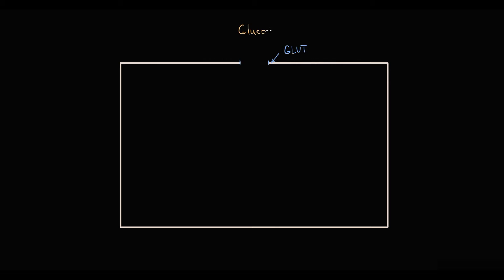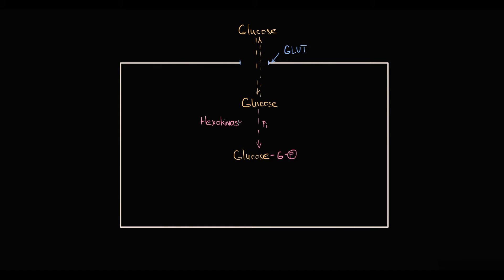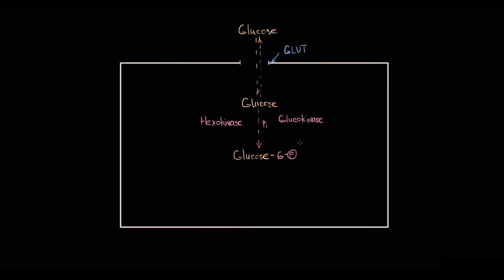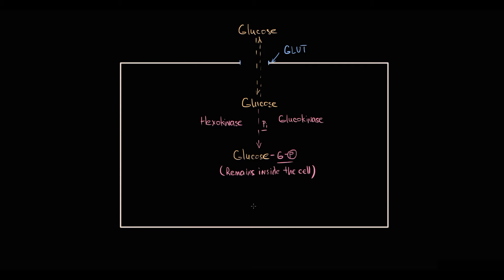Once glucose from the blood enters into the cell through a GLUT transporter, glucose has to be trapped by phosphorylation, because otherwise glucose will simply leave the cell by a GLUT transporter. We have only two enzymes in our organism that can trap glucose – hexokinase and glucokinase. They catalyze the same reaction: they phosphorylate glucose with production of glucose 6-phosphate, and by this phosphorylation they trap glucose inside the cell, because the phosphate group makes glucose too big for the GLUT transporter.